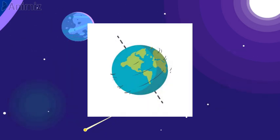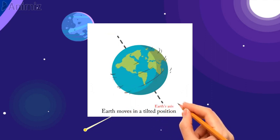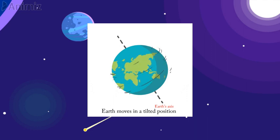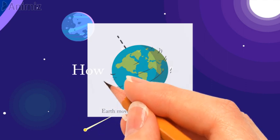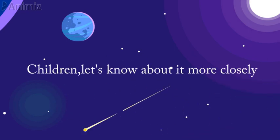Now look at this. The earth moves in a tilted position and not exactly upright. And so the imaginary line in the middle of the earth which is called the earth's axis is also tilted. Therefore the earth moves along with its tilted axis. And this is another reason behind the occurrence of different seasons. But the question is how does it happen? So children, come let's know about it more closely.